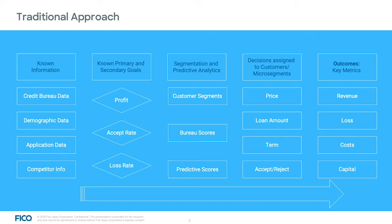Using segmentation and predictive analytics, you start with customer segments, build strategies or segmentations using bureau scores and predictive scores. Once you have built your segmentation, you assign the different actions or decisions to be taken. In a loan originations example, the key decisions are a pricing decision, a loan amount decision, a term decision, and of course an accept/reject decision. Once implemented, you measure outcomes and continue the same process in a champion-challenger approach, looking at how to find better strategies that give different results.